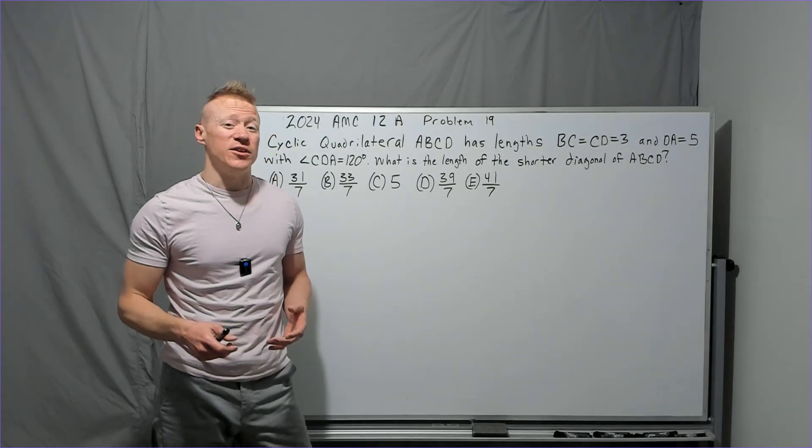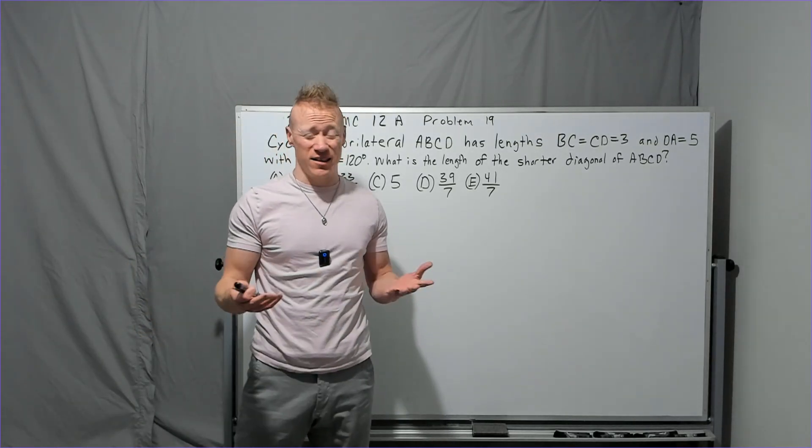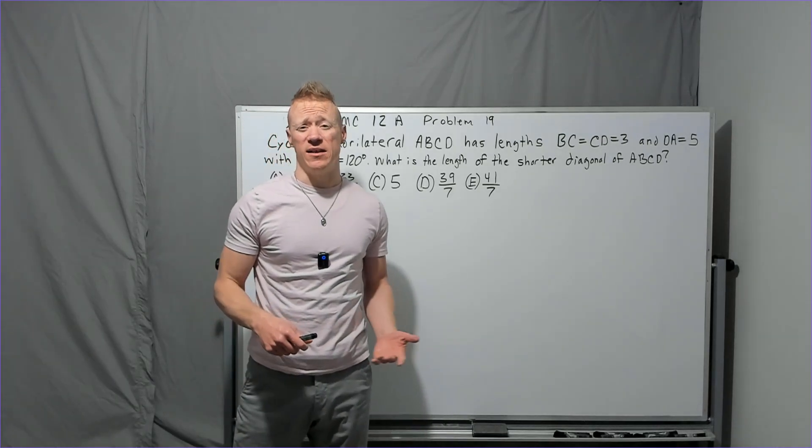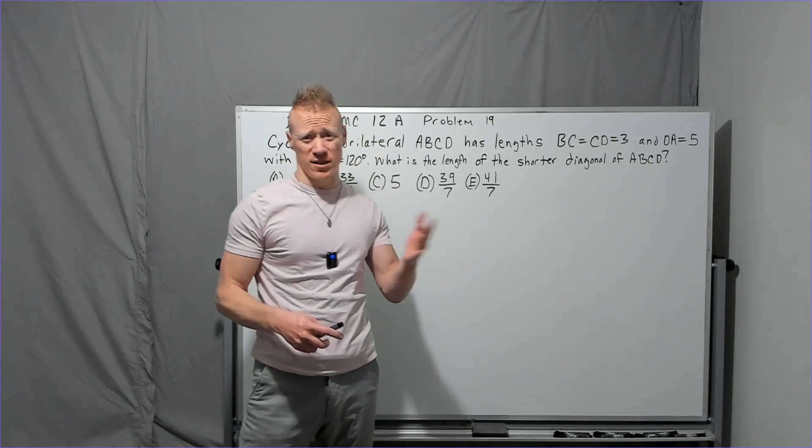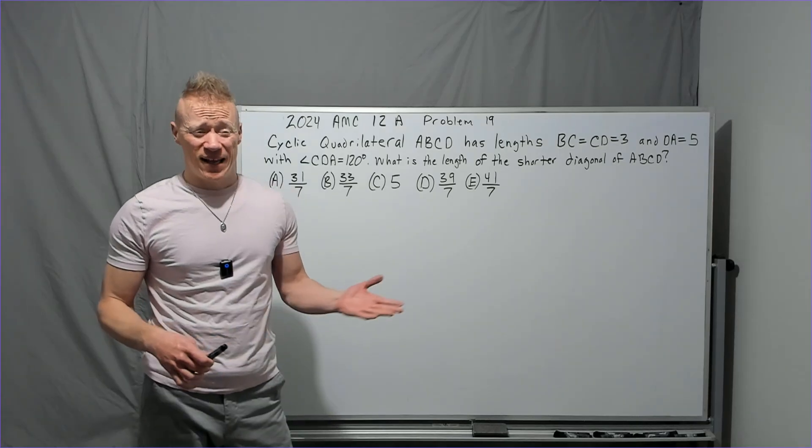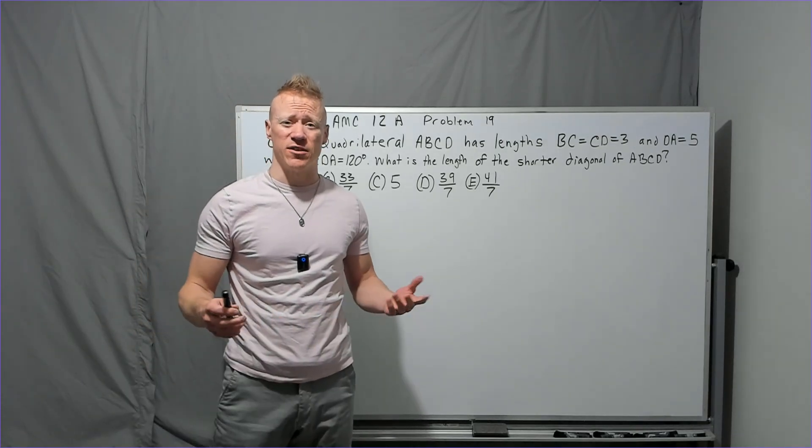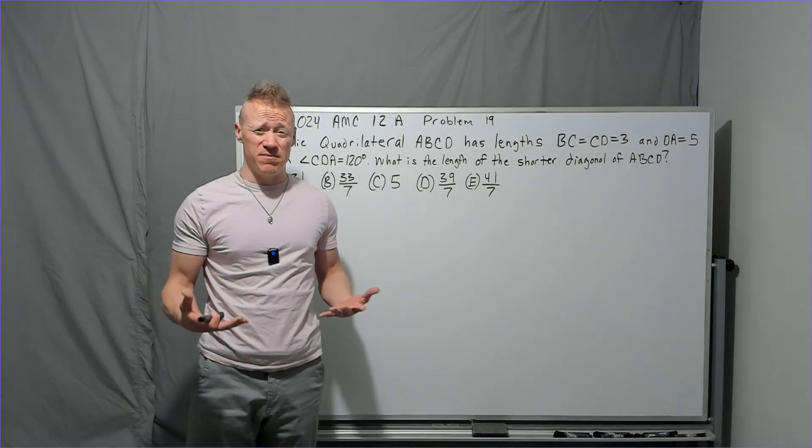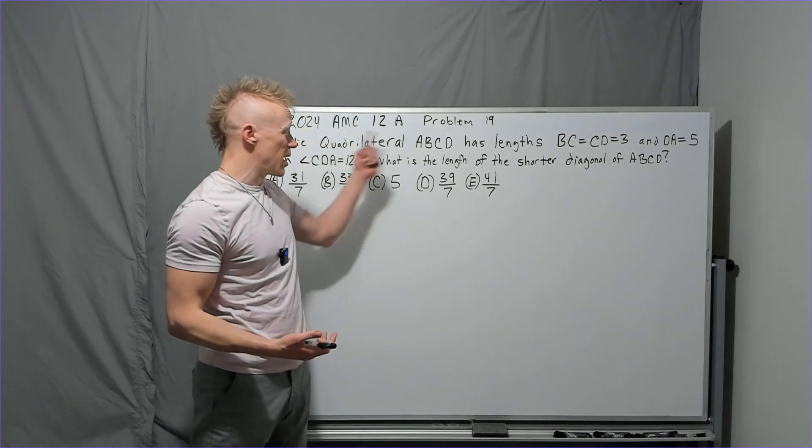So on this year's AMC 12, you probably had a little bit of challenge in the beginning with several questions. Things like problem seven with the vector sum or problem eight with the log of the sine of three theta and several other problems that came after that in the early teens. One thing that you might want to start doing then maybe on the B test is start problem hunting.